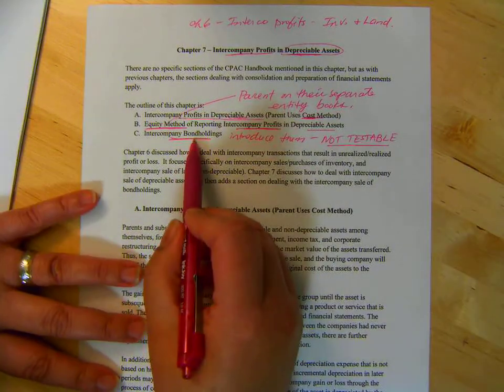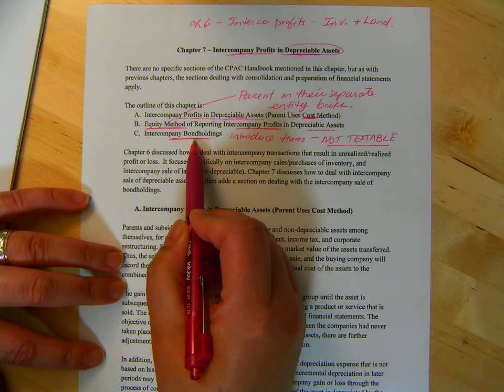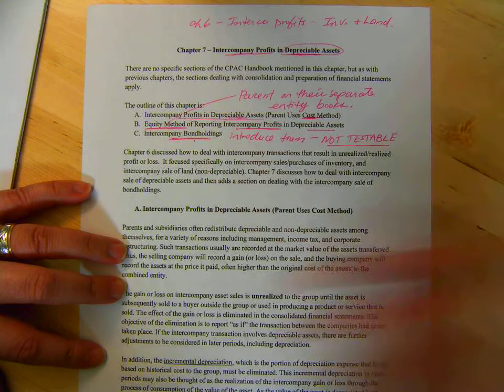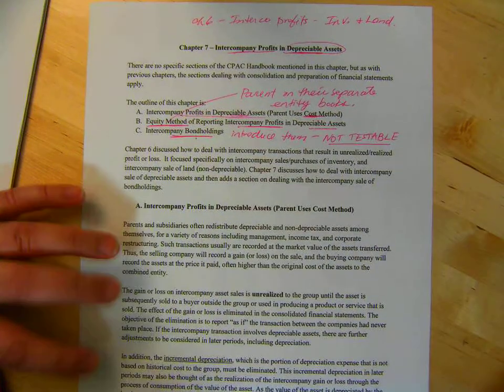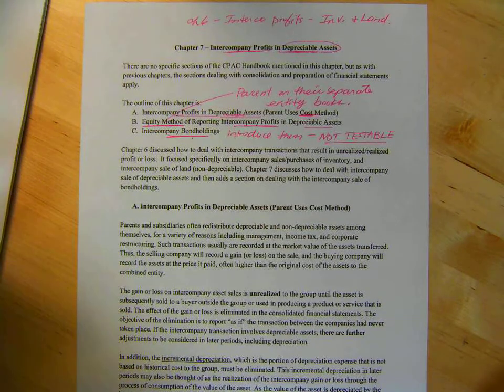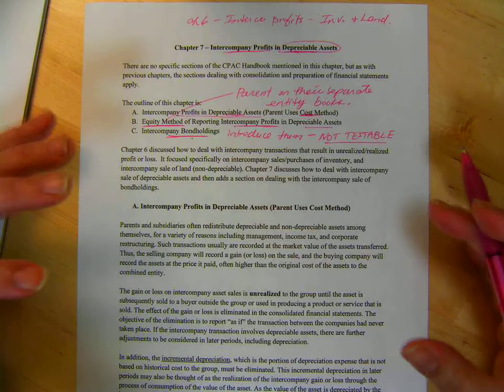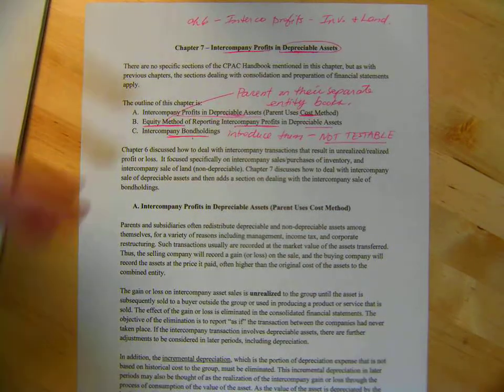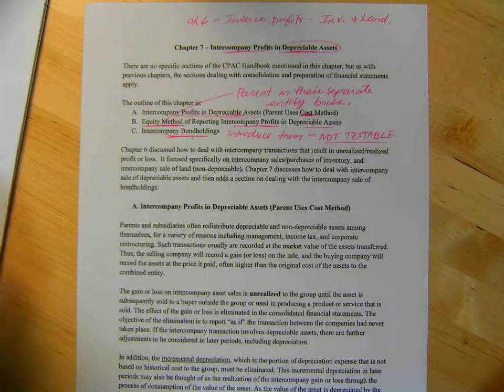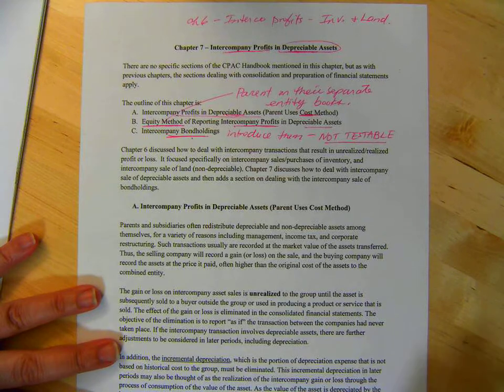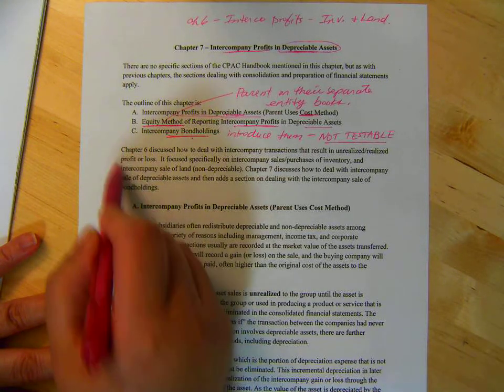With bond holdings, it's backwards. You realize the profit or loss first and then you unrealize it later. And I'll give you a brief explanation of that. But I find it really messes students up who don't already have a really good grasp of inventory, land, and depreciable assets. So, we're going to leave that for you to read on your own.